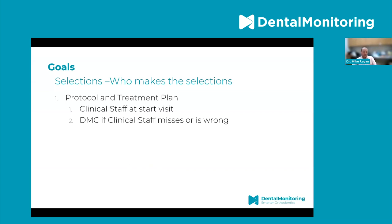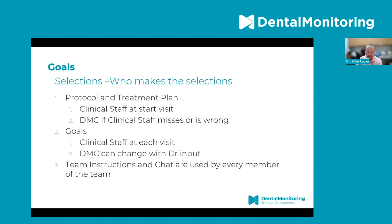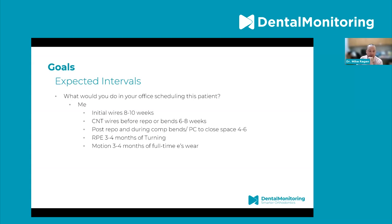Who makes the goal selection in your office? It starts with protocols and the treatment plan — your staff member sets the protocol and treatment plan at the start visit. Your DM coordinator makes sure it's the right one. When it comes to goals, your clinical staff sets them at each visit, not just the start visit — you want to reset those goals to match what you're looking to do. DM can change it based on doctor input. Team instructions and chats are used by every member of the team.